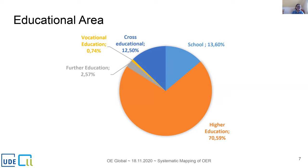Looking at the educational area in which the studies were conducted, the higher education sector is predominant with more than 70 percent, followed by the school sector. Cross-education and research could be included in about 13 percent of the studies, so it plays a quite important role as well.